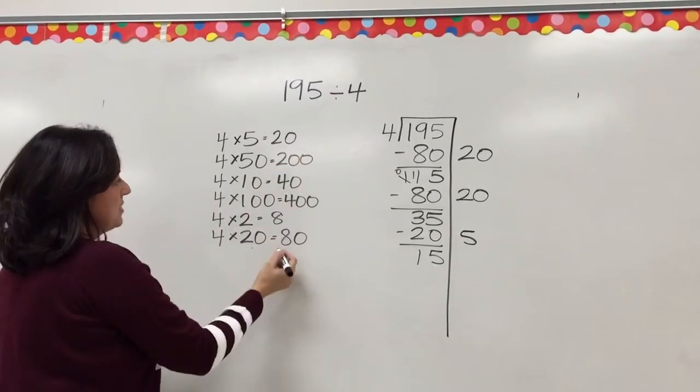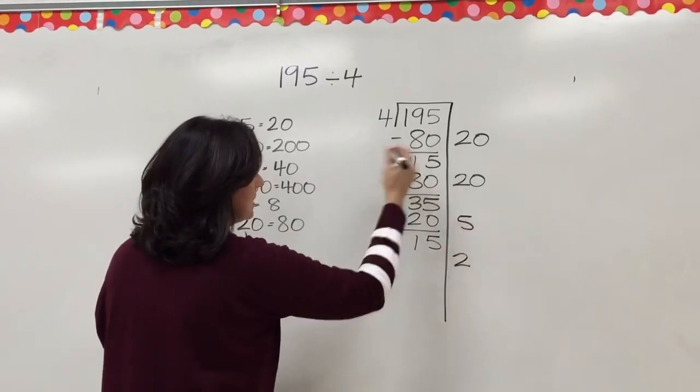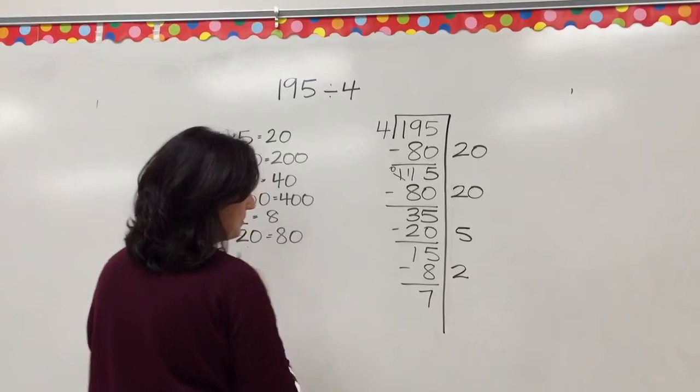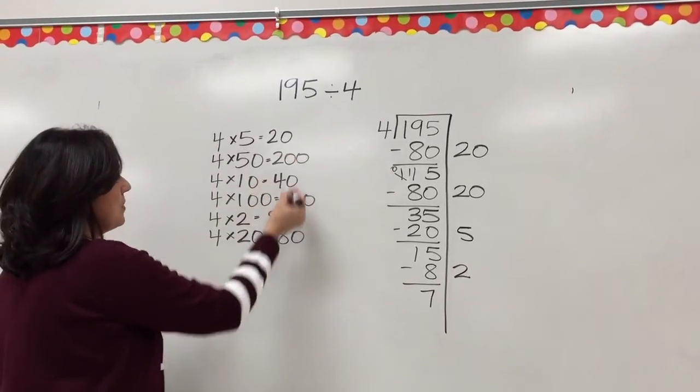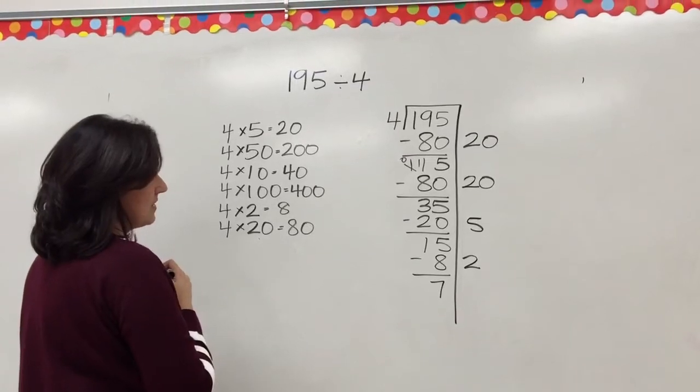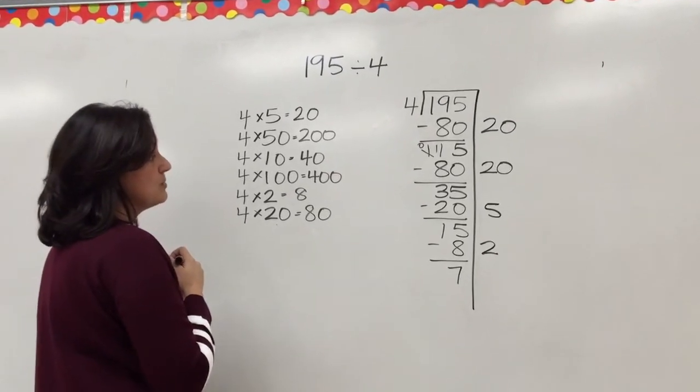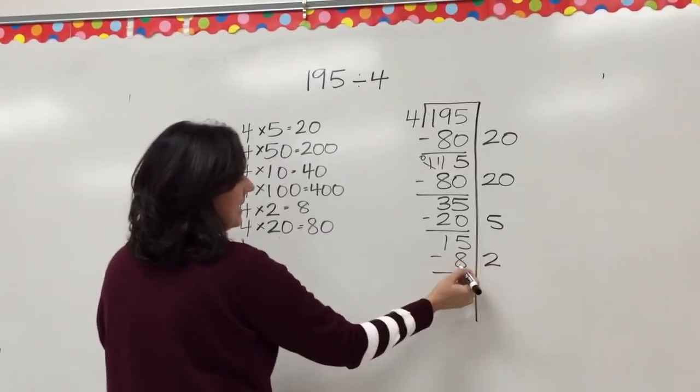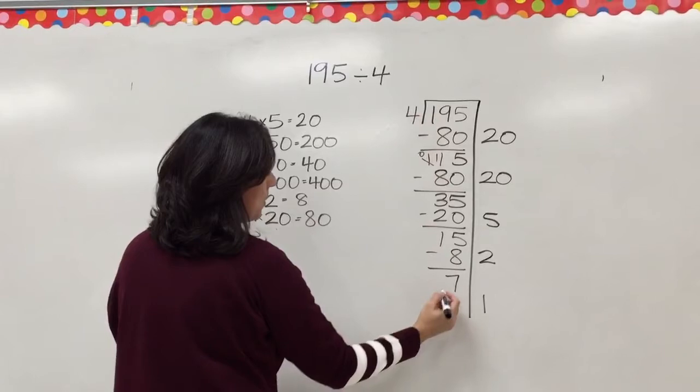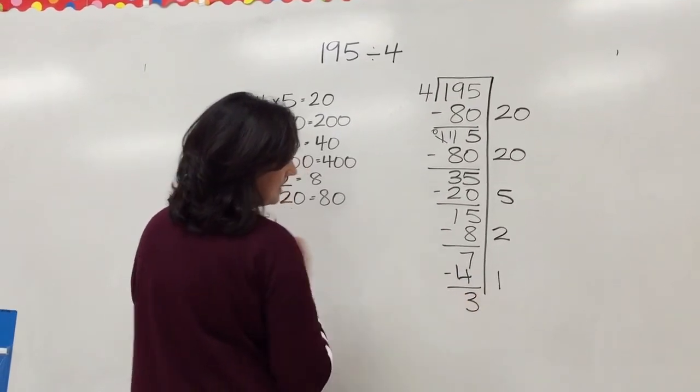15. If I use my benchmarks, I can go for 2 because 2 times 4 will give me 8. I'm left with 7. There are no numbers on my benchmark that are less than 7. So I have to think to myself, 4 times 1 is 4, 4 times 2 is 8. And 8 is too much. So I've only got one group of 4 left. When I subtract, I have 3.